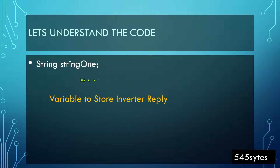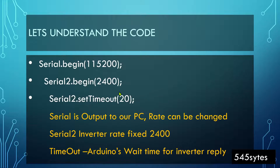The next line has a global variable of type String, and the name is string1. I've used code already shared by the resilient buddy on the Arduino forum, so I'm using the same variables. What this variable does is store whatever reply is received from the inverter.